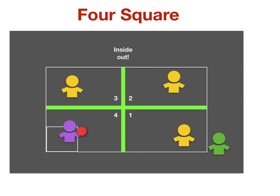Let's go over a few rules. The first one is inside is out. This means that if a ball hits an inside line, the person who volleyed it is out. In this case, the purple player.